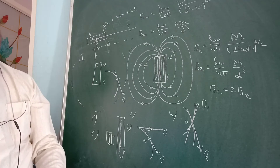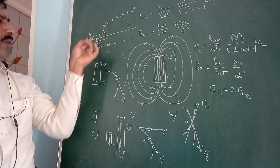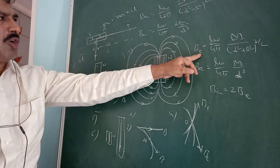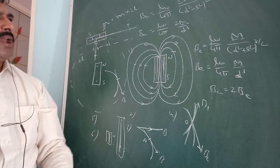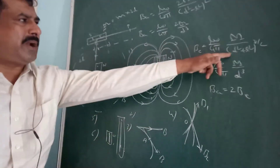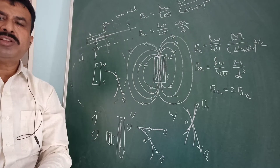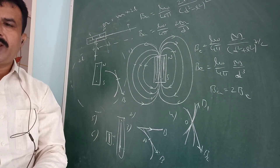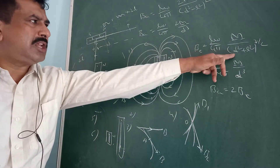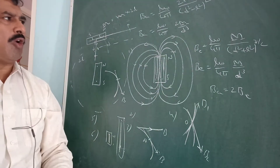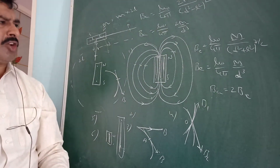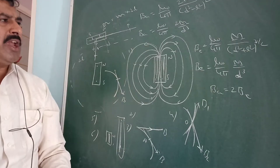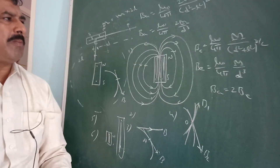The magnetic field along the equatorial line of the magnet is given by: B_E = (μ₀/4π) × M / (D² + L²)^(3/2). For a short magnet, this simplifies to: B_E = (μ₀/4π) × M / D³.